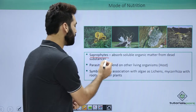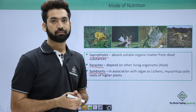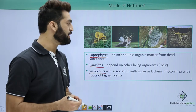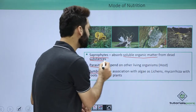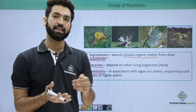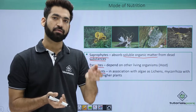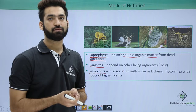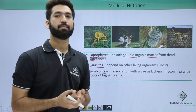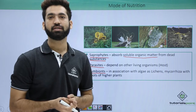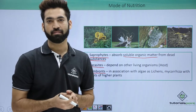The first mode is saprophyte, the next is parasite, and the third is symbiosis. Saprophytes take soluble organic matter from dead decaying substances. They secrete enzymes that extract nutrients from dead decaying matter. Most saprophytes also perform the function of decomposing, because they are degrading and decomposing the decaying matter.